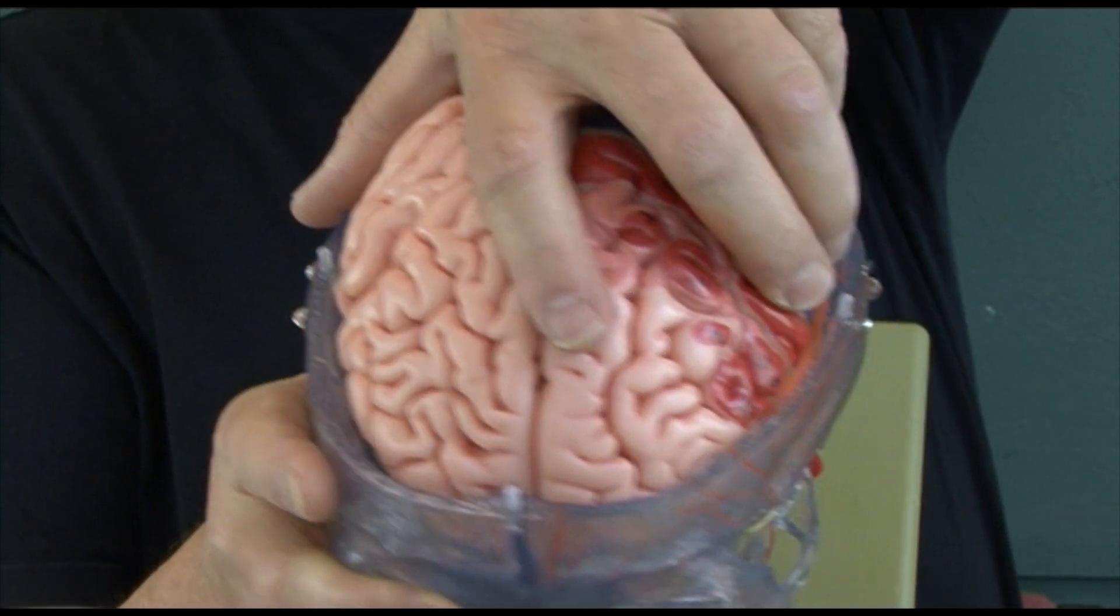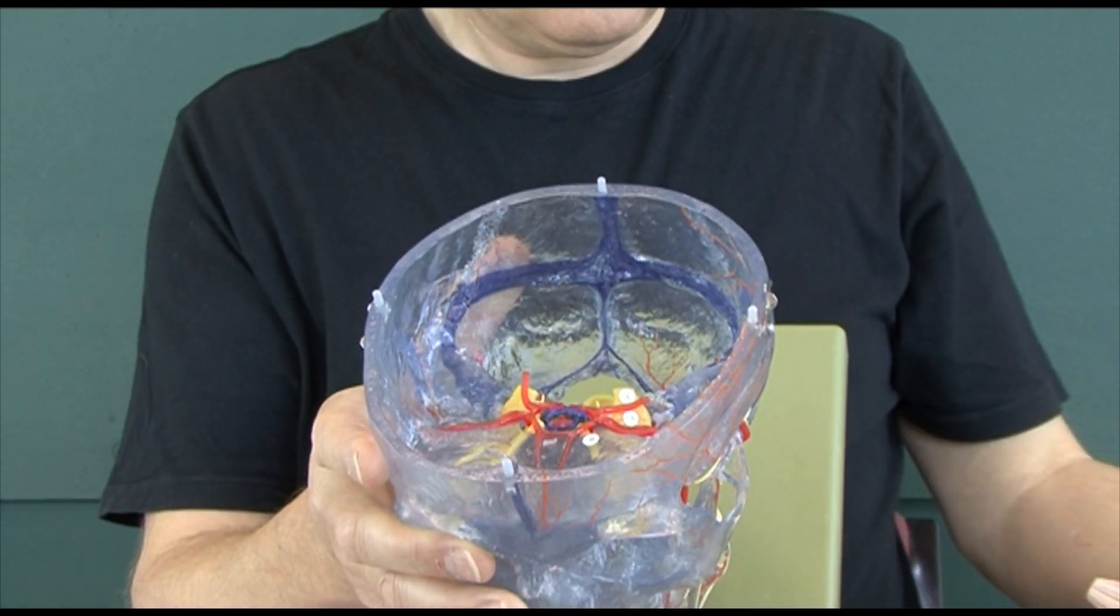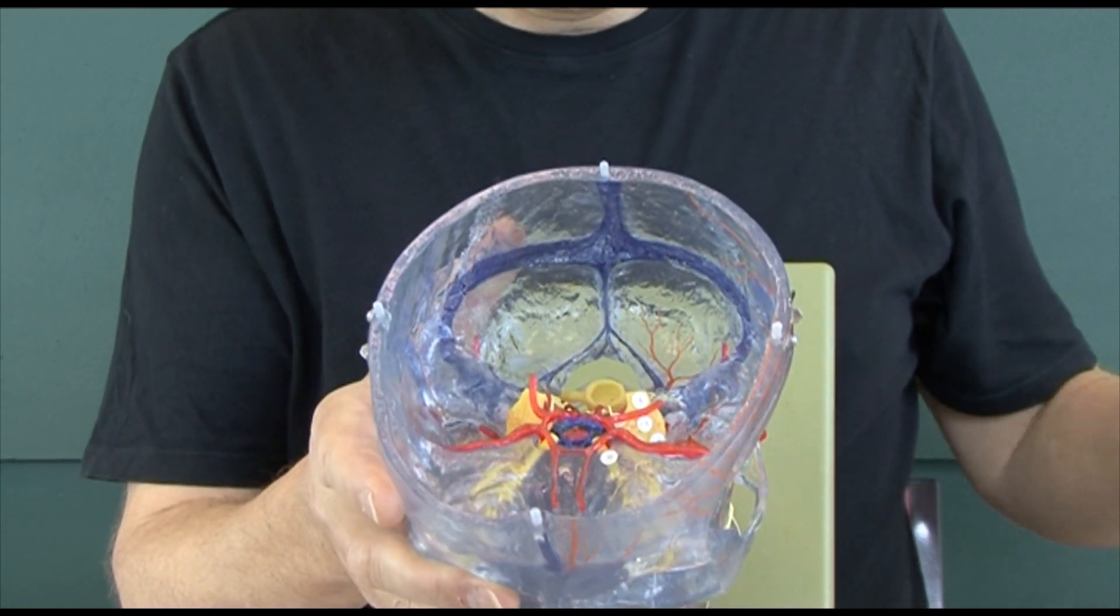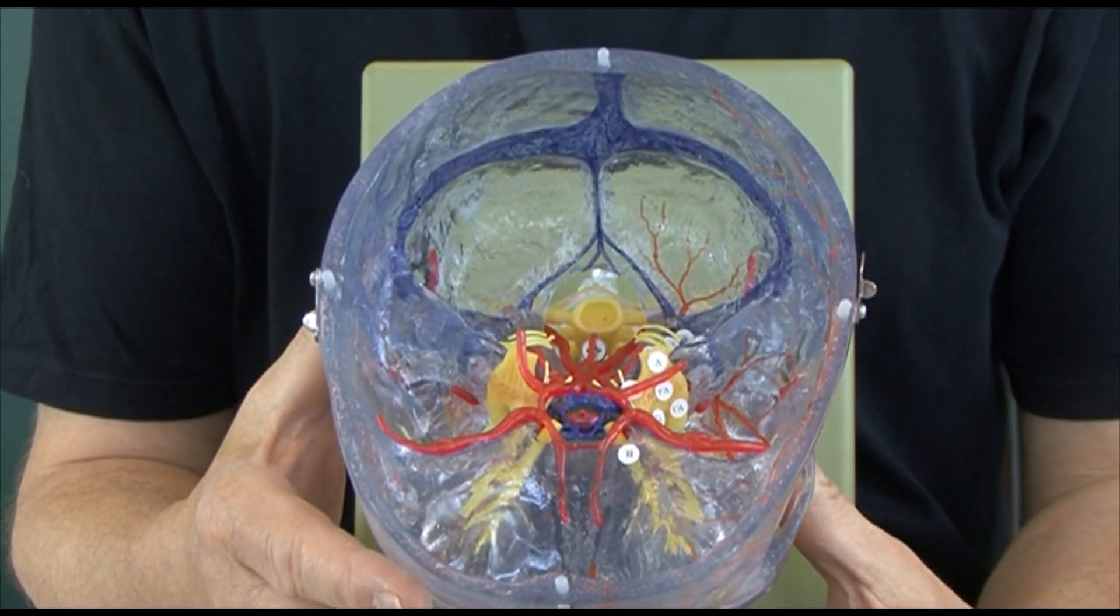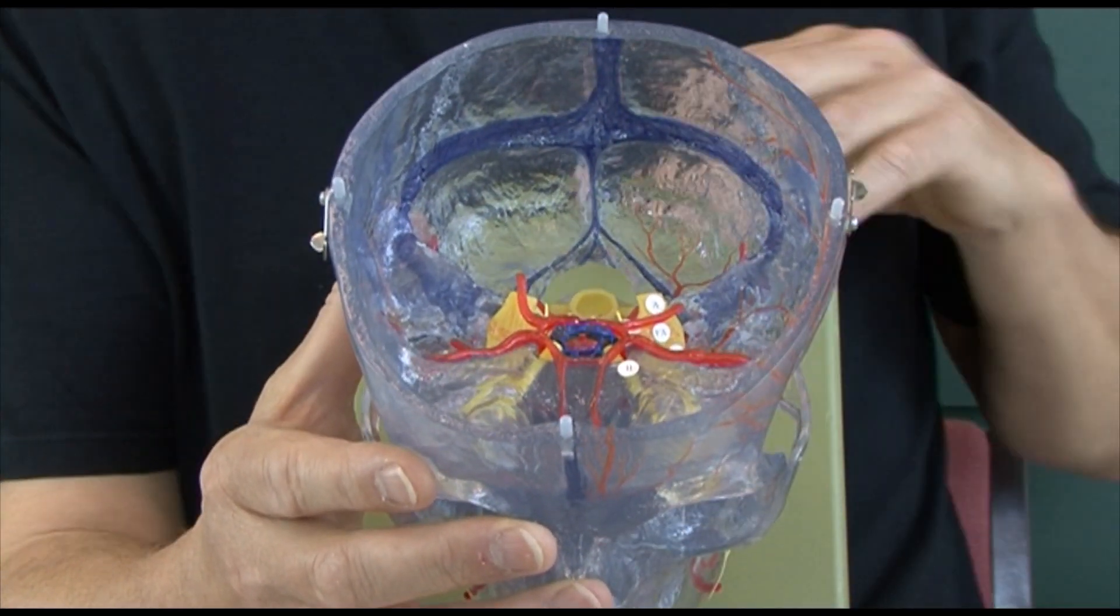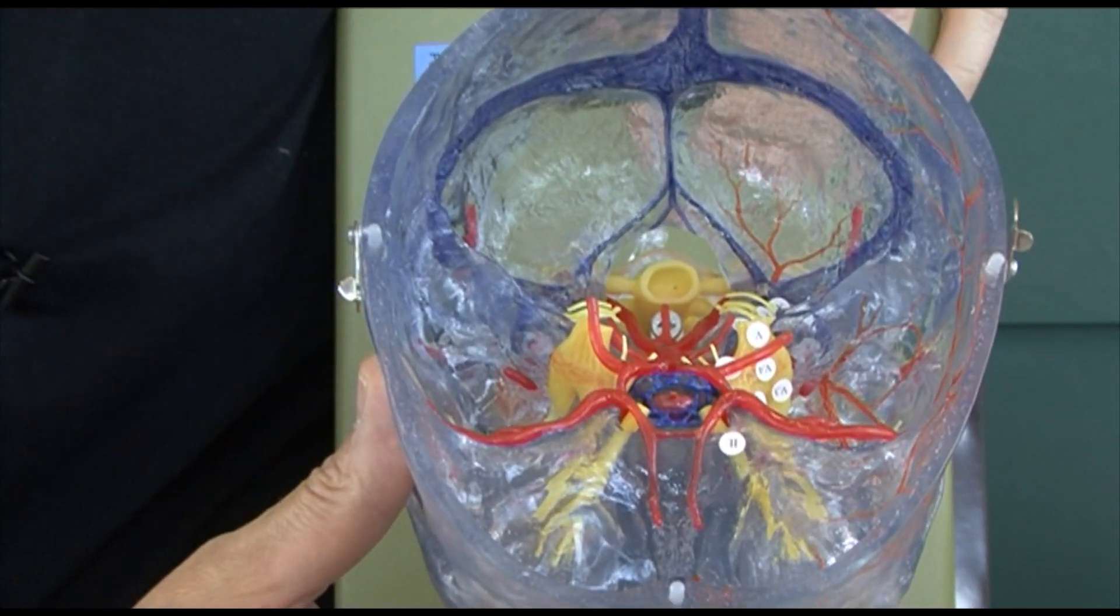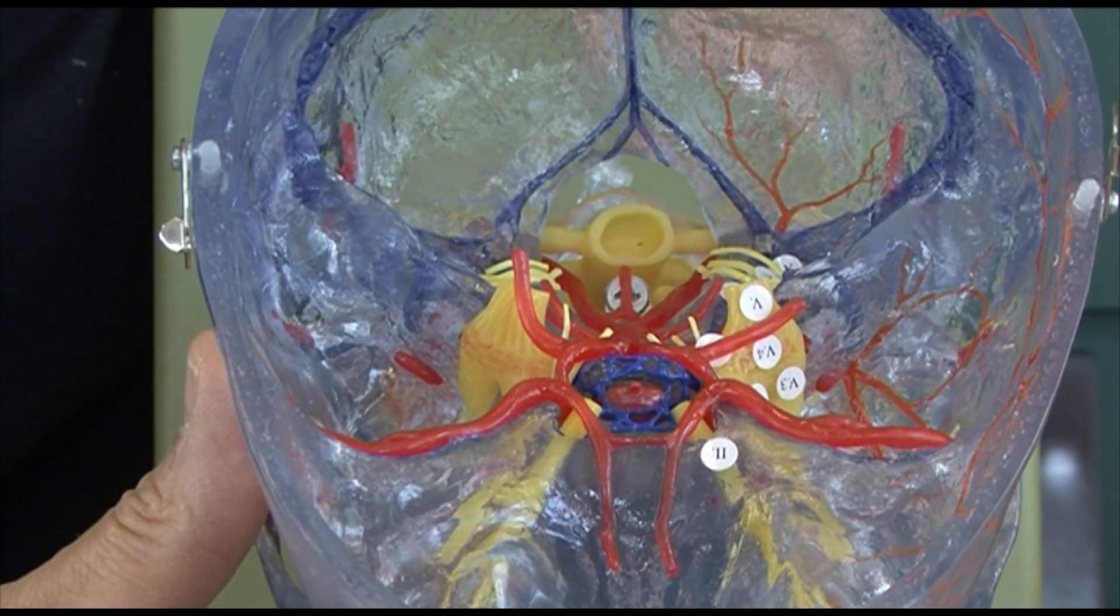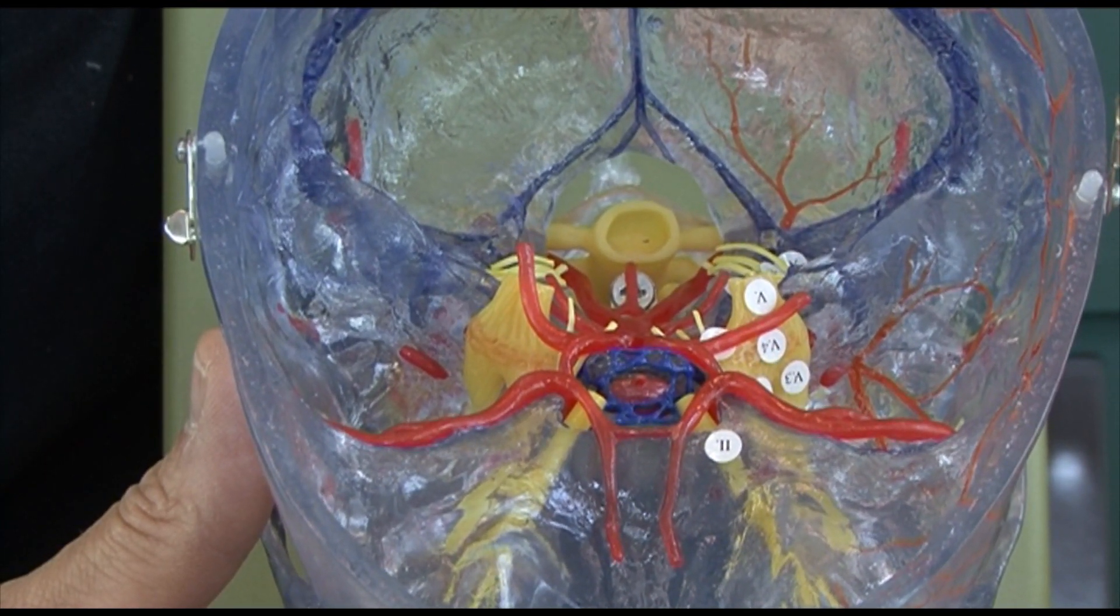And of course we can take this brain out, leaving us the floor of the skull, the base of the skull. In this model in red we have the arterial system taking blood to the brain.